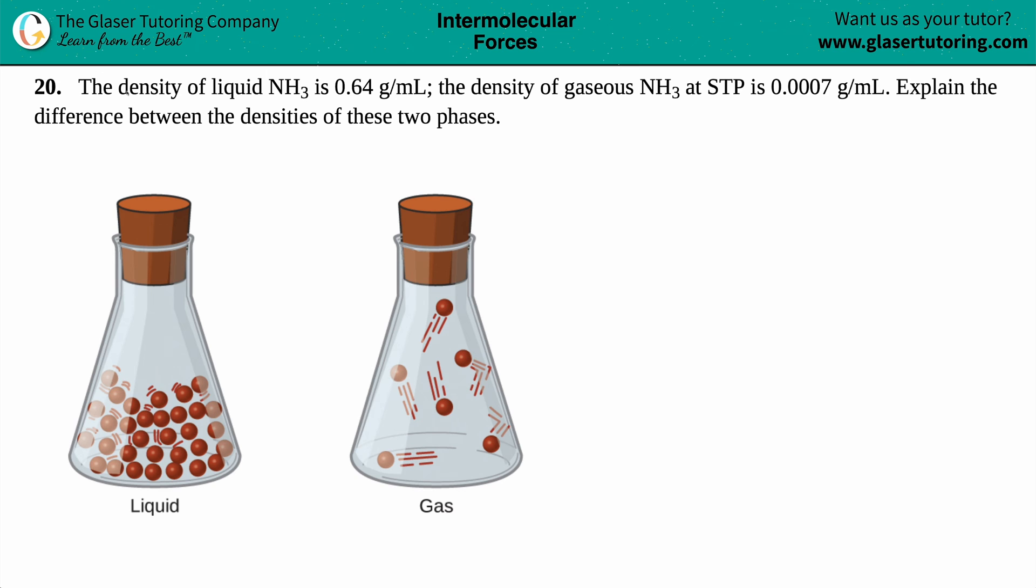Number 20. The density of liquid NH3 is 0.64 grams per milliliter, and the density of gaseous NH3 at STP is 0.0007 grams per milliliter. Explain the difference between the densities of these two phases.